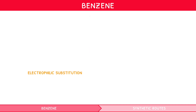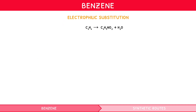Benzene undergoes electrophilic substitution to form nitrobenzene plus water, a pale yellow liquid, when reacting with concentrated nitric acid. It does so under reflux at 60 degrees Celsius and in the presence of concentrated sulfuric acid. Whilst the displayed equation used here nicely summarises the reaction, you must also learn to draw the reaction mechanism for electrophilic substitution.